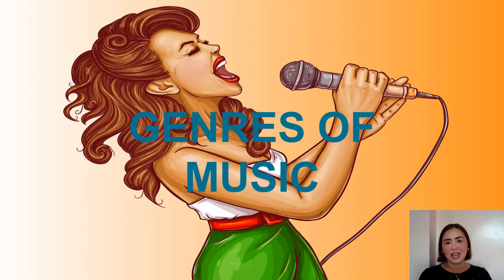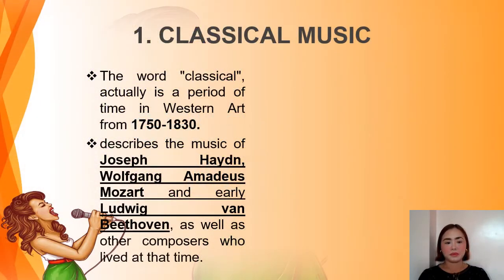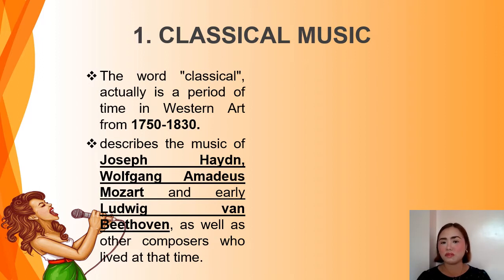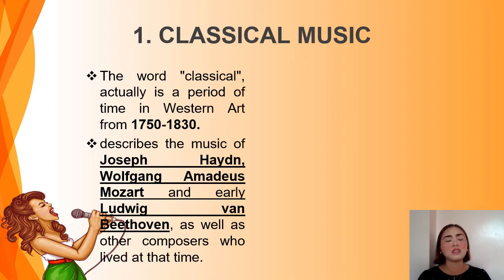Let us continue with the last part of this discussion: the genres of music. The first genre is classical music. The word classical, when used to describe a musical style, is used by popular culture to distinguish this kind of music from jazz, rock, or other contemporary styles. The word classical actually refers to a period of time in Western art from 1750 to 1830, so classical pertains not only to music — you have classical literature, classical paintings, and so on.